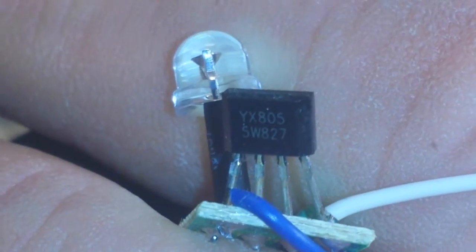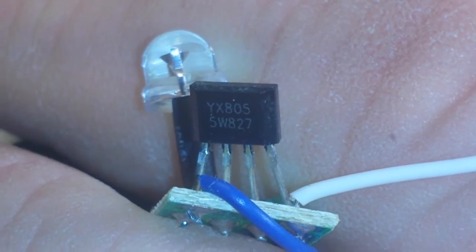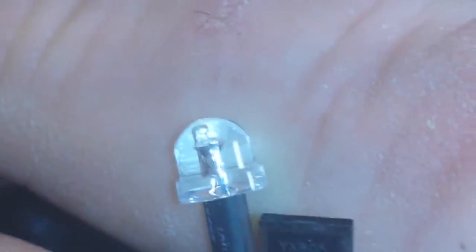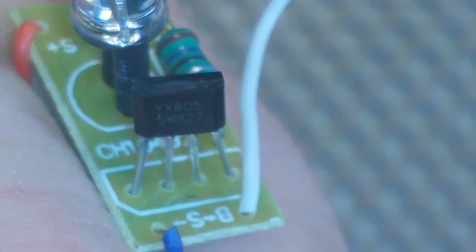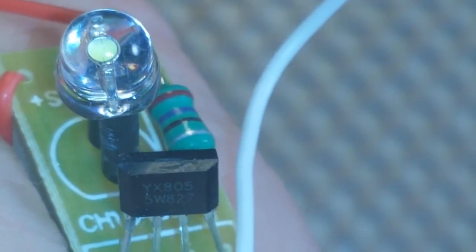And a transistor. Let's see if we can zoom in on that transistor. YXB0S5W827. Well, that's not a transistor. It's actually got four legs to it. Give me a second. Let me look that up. The only information that I can find is it's a linear voltage regulator. But that's really it.